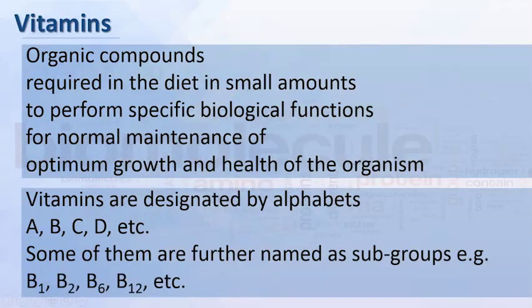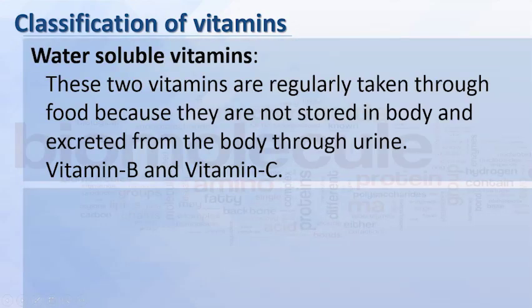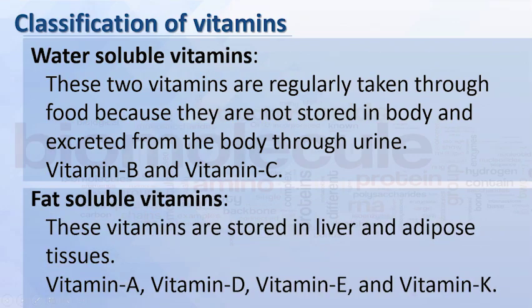Vitamins are designated by alphabets A, B, C, D, etc. Some are further named as subgroups, for example B1, B2, B6, B12, etc. Classification of vitamins: water-soluble vitamins — vitamins B and C — are regularly taken through food because they are not stored in the body and are excreted through urine. Fat-soluble vitamins — vitamins A, D, E, and K — are stored in the liver and adipose tissues.